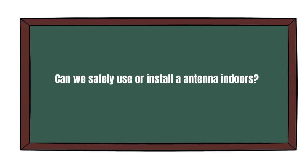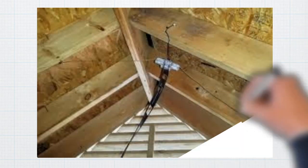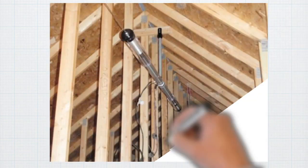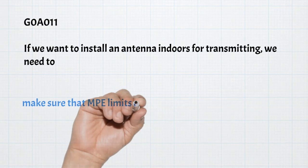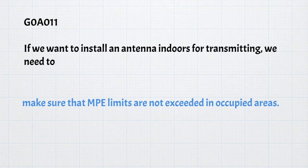Another safety question is: can we safely use or install an antenna indoors? Homeowner associations are notorious for banning outside antennas, forcing many hams to place them inside their attics. No matter if you use a homebrewed antenna or a commercial antenna, always do your due diligence and perform a safety evaluation. For the exam, you need to know that if we want to install an antenna indoors for transmitting, we need to make sure that the MPE limits are not exceeded in the occupied areas.